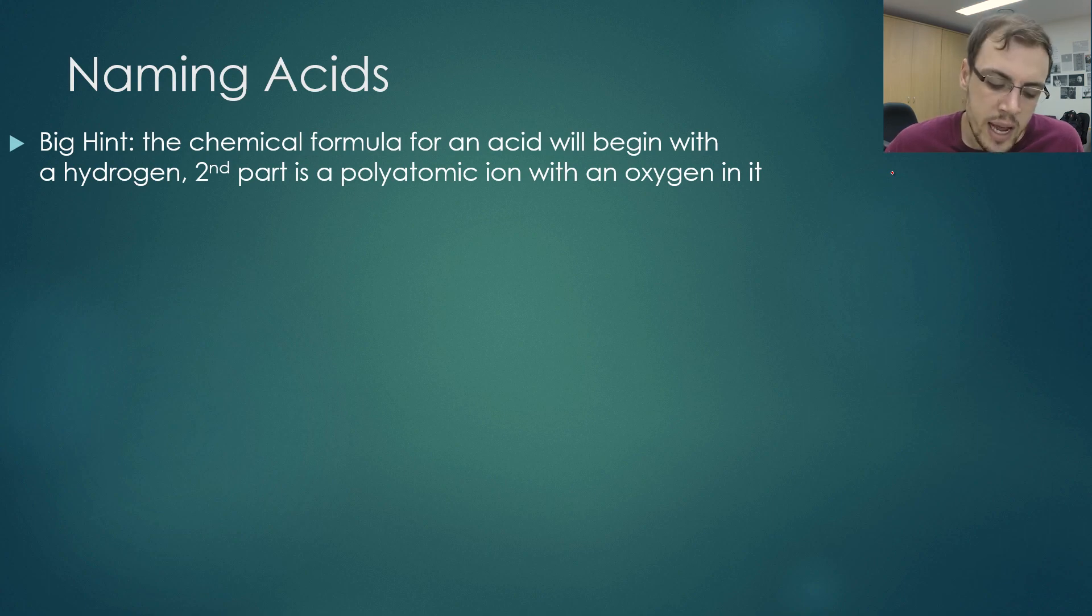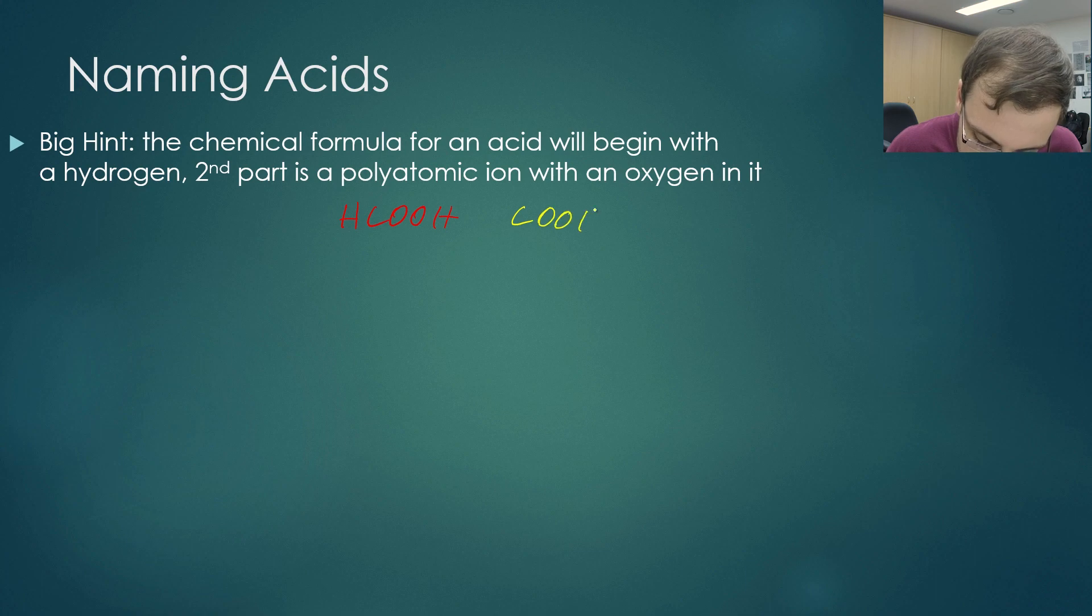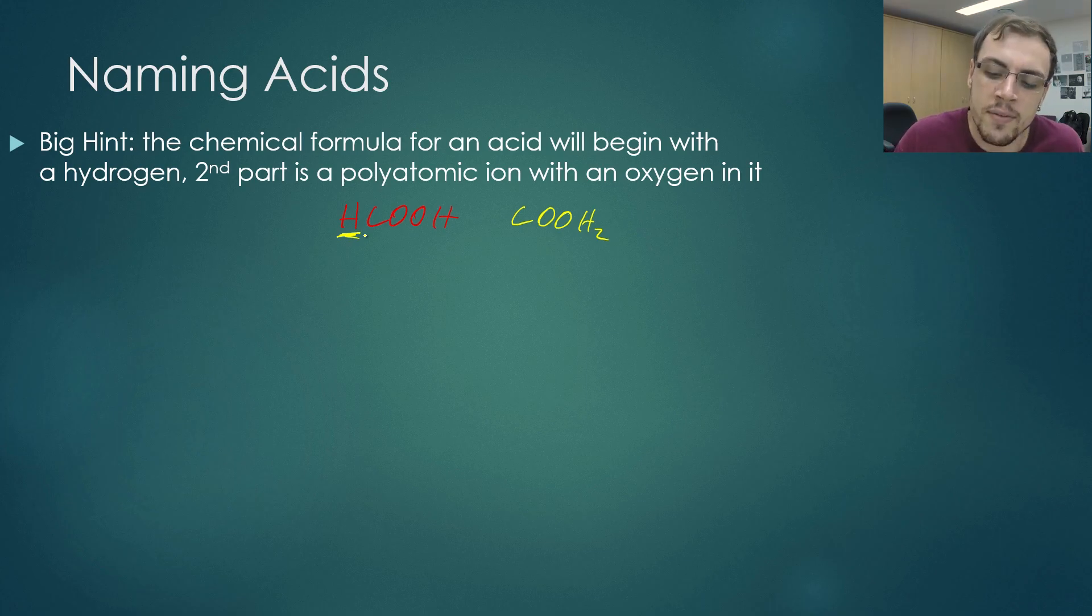Now that we've finished polyatomic ions, we're now going to finish things up by naming acids. There is a gigantic hint as to when you will be presented an acid in your exam, and that is that the chemical formula for an acid will always begin with a hydrogen. For example, if we've got like acetic acid, we've got HCOOH. Instead of writing COOH2, this hydrogen is at the front, and that tells you that you have an acid.